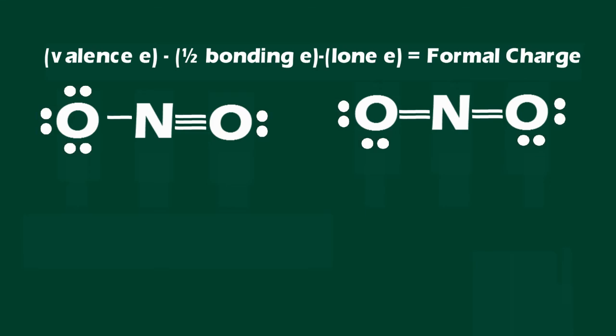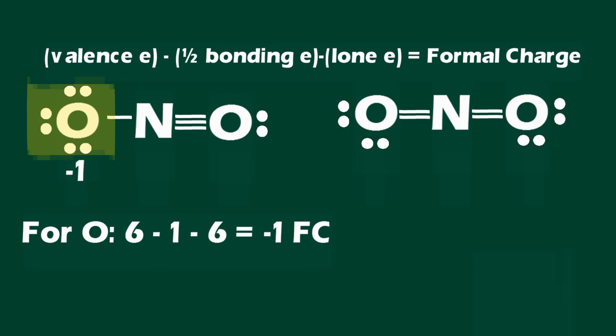This structure has one single bond between the nitrogen and an oxygen and one triple bond between the nitrogen and an oxygen. For the singly bonded oxygen, the formal charge is six valence electrons minus one half the bonding electrons minus the six lone electrons on the oxygen. This gives a formal charge of negative one on the singly bonded oxygen atom. We can apply this formula to each of the other atoms in the two Lewis structures for nitronium.